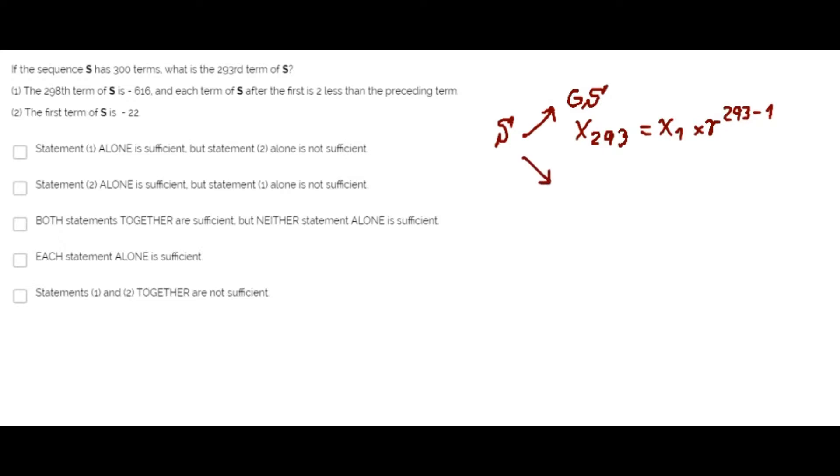But if sequence S is an arithmetic sequence, the 293rd term is the first term plus 293 minus 1 times the common difference.